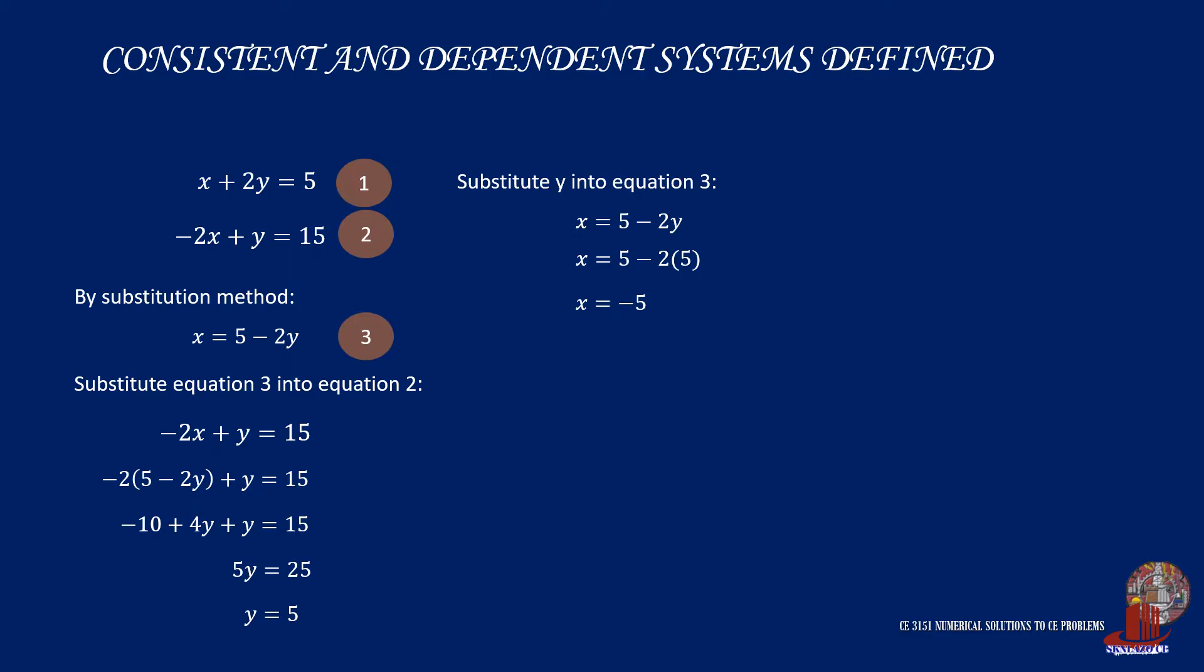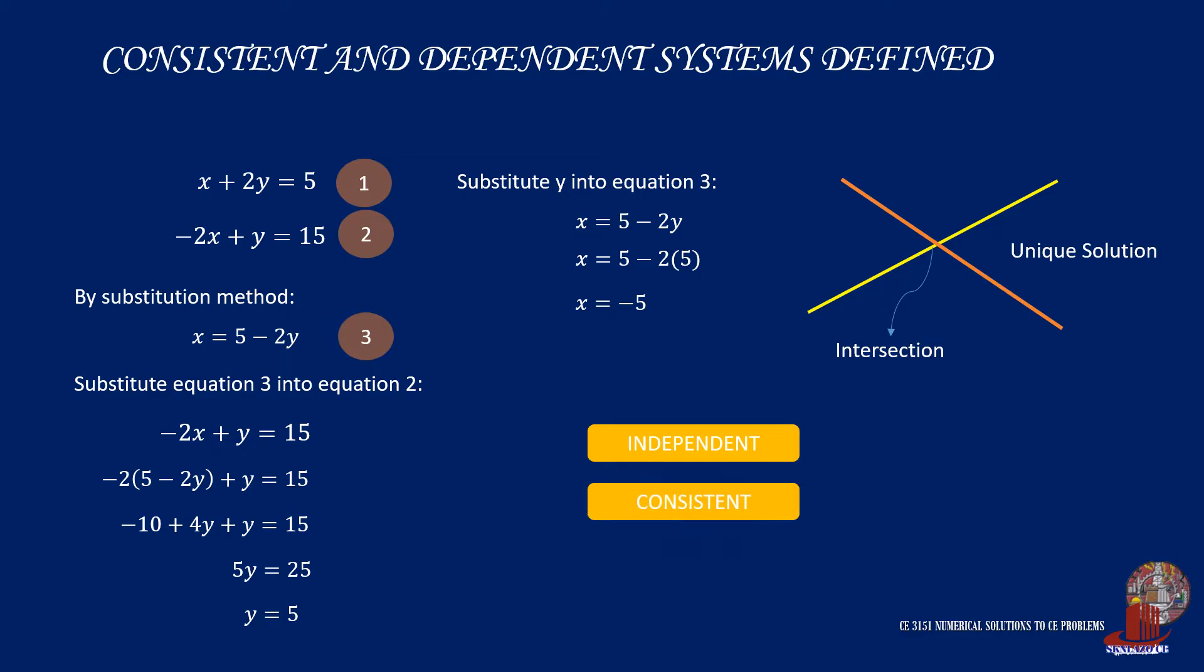If we illustrate the two equations in the graph, we can note that they actually intersect at a single point. And that point is at negative 5 and positive 5, which are the values of x and y. This is the case of an independent and consistent system of equations.